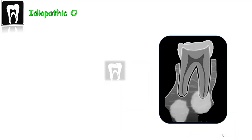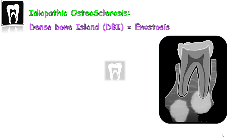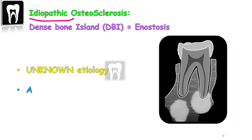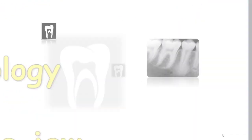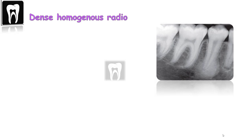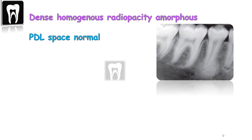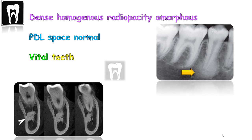Idiopathic osteosclerosis, also known as a dense bone island, osteosis, or hypercementosis — this finding is of unknown etiology. That's why we say it's idiopathic, and it typically occurs in the posterior of the mandible, but it can be found anywhere within the jaw. Idiopathic osteosclerosis presents as a dense, homogeneous radiopacity with an amorphous shape. When it's associated with a root, the periapical space is normal and the tooth is vital. On a CBCT, it will blend into the adjacent cortex with no thinning or expansion.